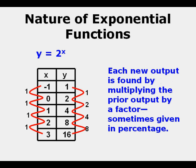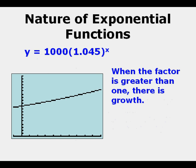Each new output is found by multiplying the prior output by a factor. Sometimes it's given in percentage. Here we have the function y equals 1,000 times 1.045 to the power of x. When the factor is greater than 1, there is growth.